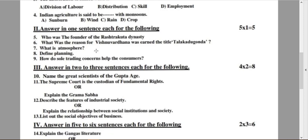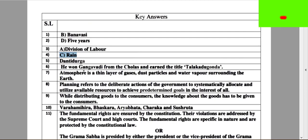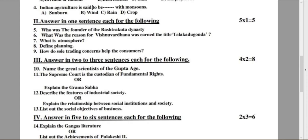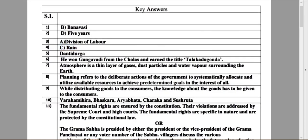And the sixth question: what was the reason for Vishnuvardhana was earned the title Talakadu Gunda? And the answer for this question: he owned Ganga Wadi from the Cholas and earned the title Talakadu Gunda. Another next question, question number 7: What is atmosphere? The answer for this: atmosphere is the thin layer of gases, dust particles and water vapour surrounding the earth.